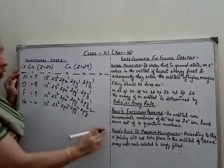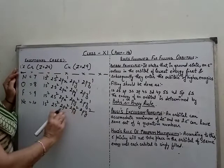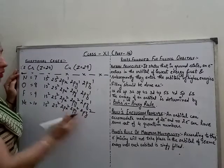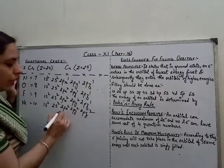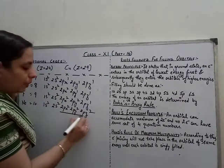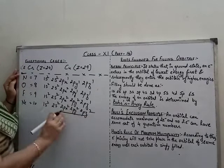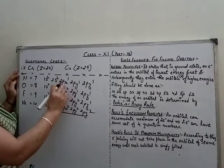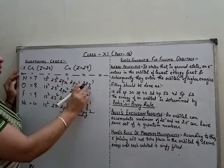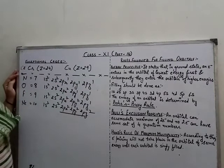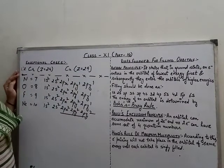According to the rule, the pairing of electrons in same-energy orbitals happens only when a single electron has been filled in each of them.